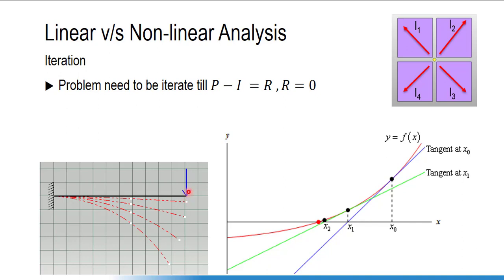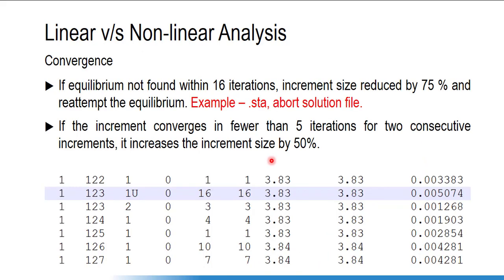For each increment, an initial assumption is made and the software iterates to get equilibrium between internal and external forces at each node. Once the solution for the first increment is found, the solver moves to the next increment and repeats the iteration process. However, if equilibrium is not found within 16 iterations, the increment is reduced by 75 percent. You can see in the .htf file that after 16 iterations, the software reduces the increment size from 0.005074 to 0.001265 — exactly a 75% reduction — and then reattempts equilibrium.